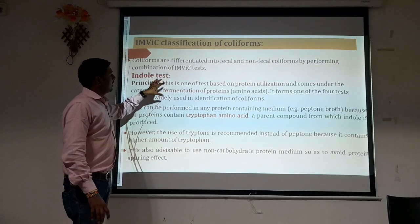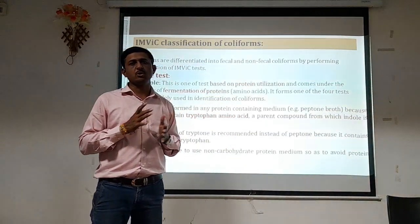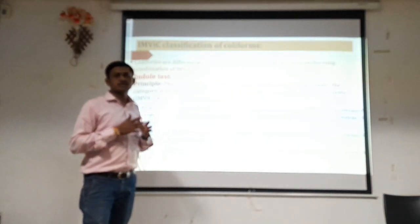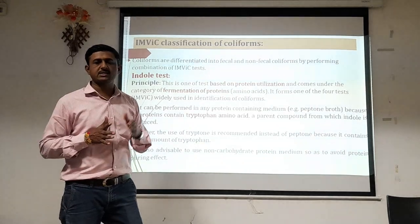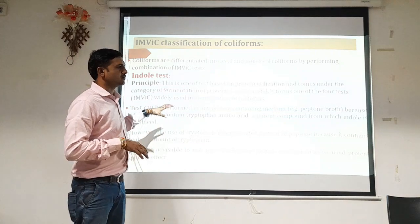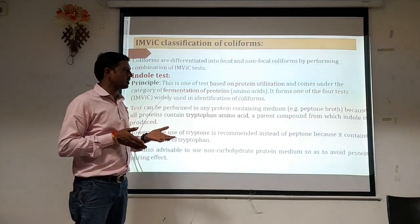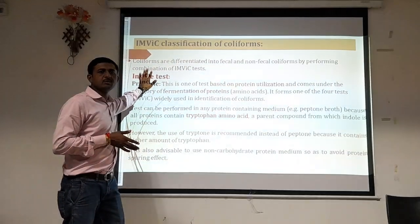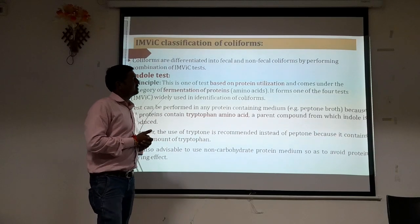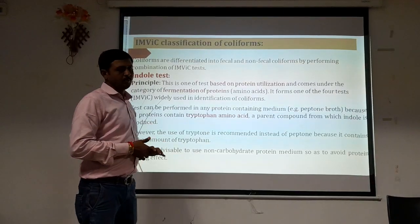Fecal and non-fecal coliforms are classified on the basis of their characteristics using the IMViC test. Four tests are used: Indole test, Methyl Red test, Voges-Proskauer test, and Citrate utilization. Combined, they are called the IMViC test, where I stands for Indole, M for Methyl Red, V for Voges-Proskauer, and C for Citrate utilization. These tests are widely used for detection of intestinal microflora and classification of fecal and non-fecal coliforms.